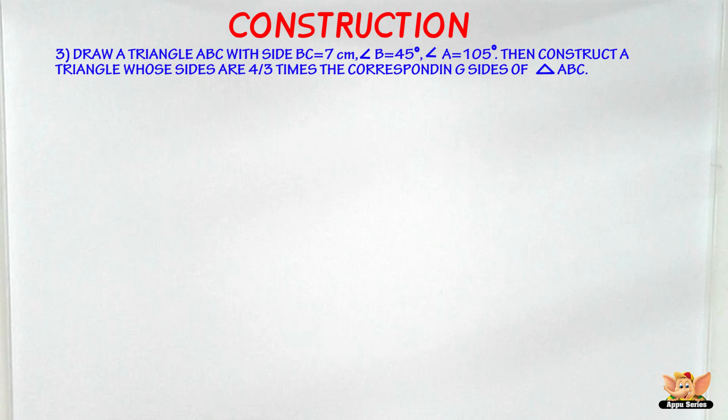So here we've got a question. It says, draw a triangle ABC with side BC equals 7 cm, angle B equals 45 degrees, angle A equals 105 degrees. Then construct a triangle whose sides are 4 by 3 times the corresponding sides of triangle ABC.